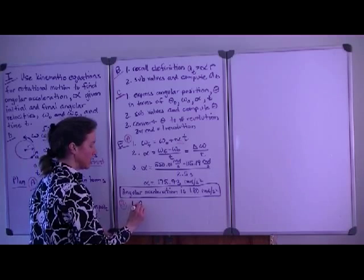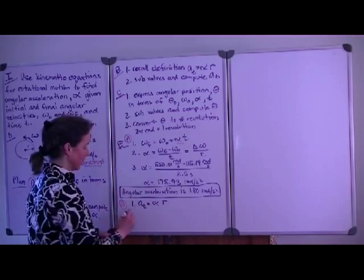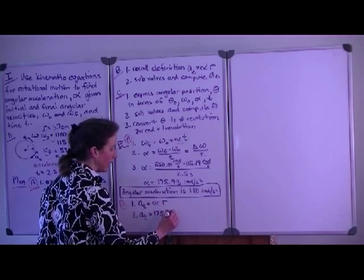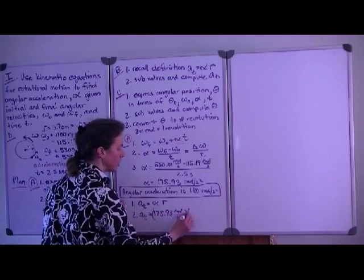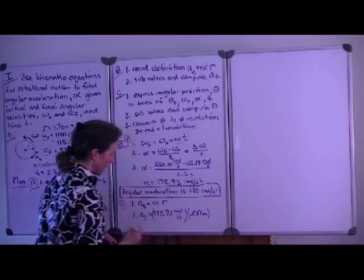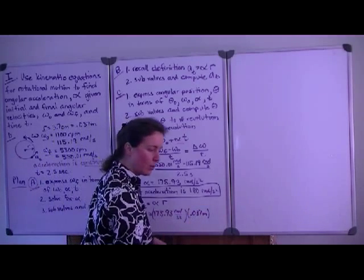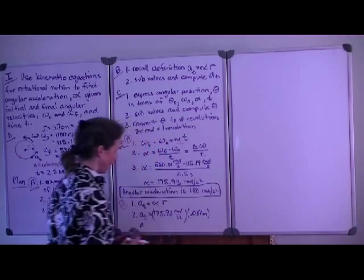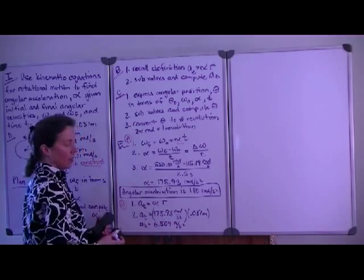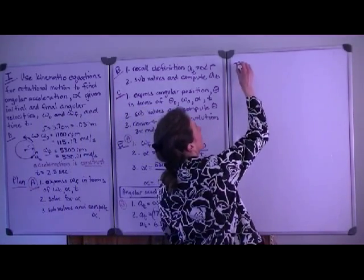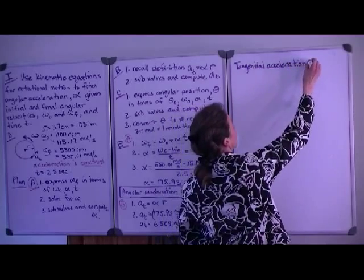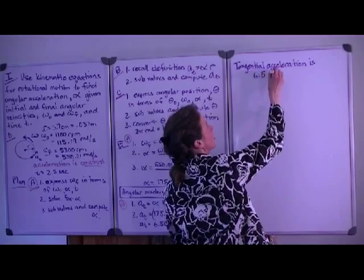So now we're on to part B. And we recall that the translational acceleration is that angular acceleration times the radius. And so we have that's equal to, we will use our non-rounded figure so that we don't introduce rounding errors, times the radius, which was 0.037 meters. And so we get that the translational acceleration is equal to 6.509 meters per second squared. And we'll report that to two significant figures. The tangential acceleration is, and that rounds to 6.5 meters per second squared.